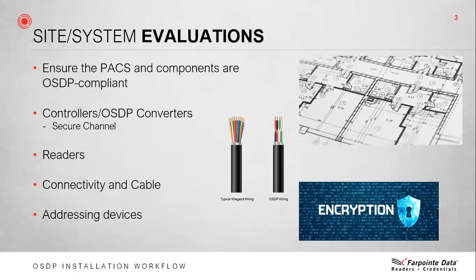Reader and device supervision and tamper is also something that may be very important to end users with a future vision. Once you establish a customer's expectations regarding scope, security, and system operation, you can better provide your team with a site and system evaluation. Regarding product capabilities, you need to ensure that your physical access control system and its relevant components are OSDP compliant or OSDP Verified. This includes the system, the controllers or controllers with OSDP converters, readers, and the wiring and cabling.